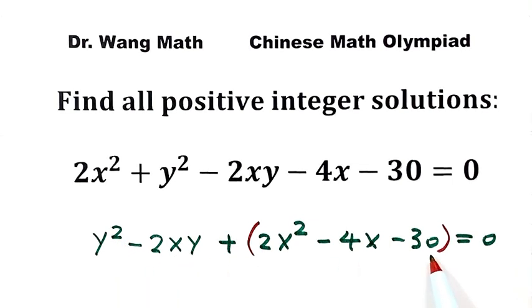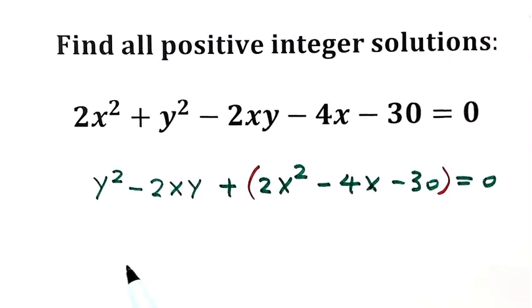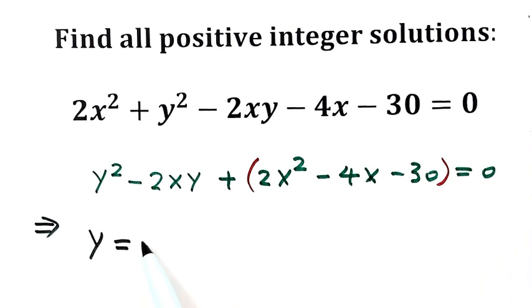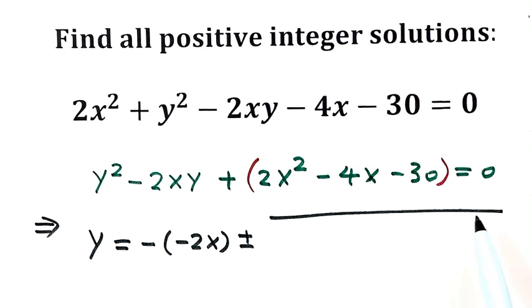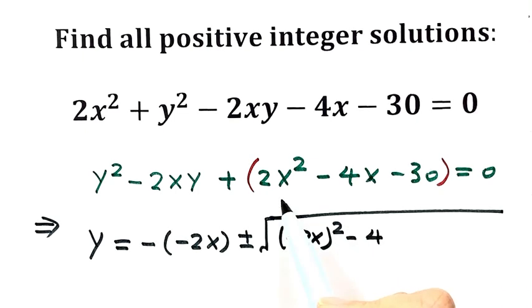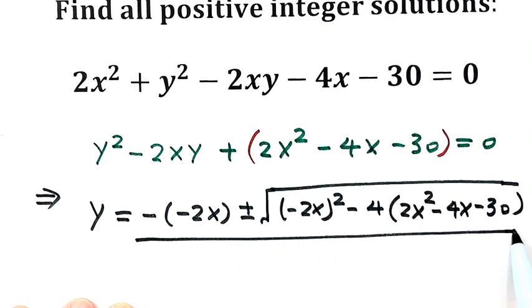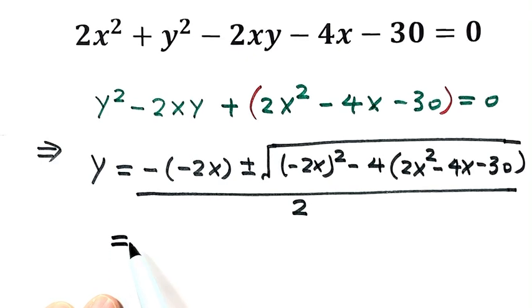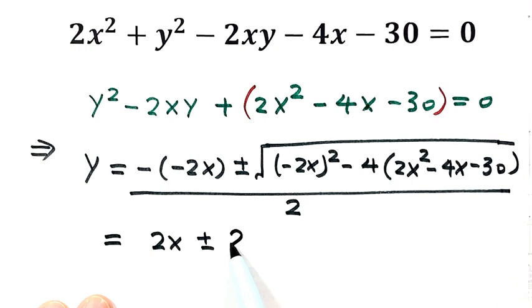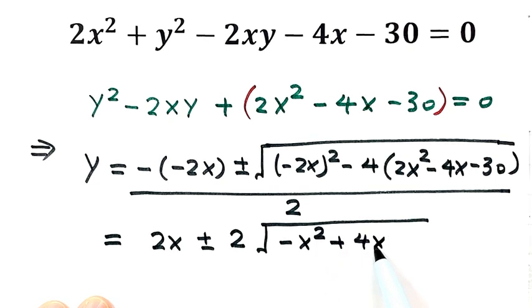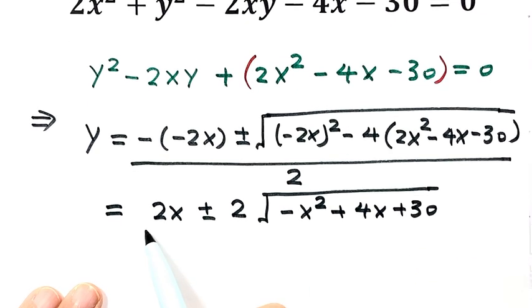So this is a, this is b, and this is c. Now use the quadratic formula to solve for y. Then y equals negative(−2x) plus or minus the square root of (−2x)² − 4·(2x² − 4x − 30), all divided by 2. Simplifying: 2x² + x² + 4x + 30, all divided by 2.